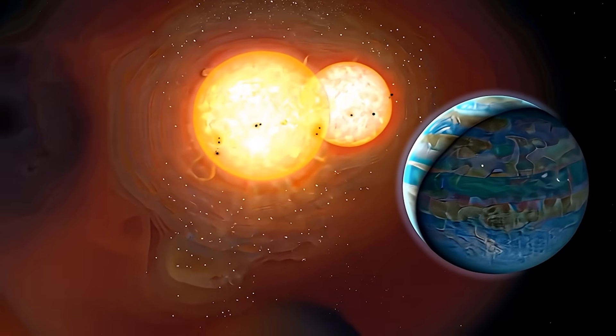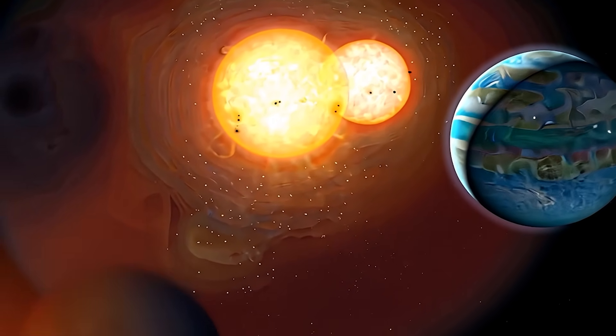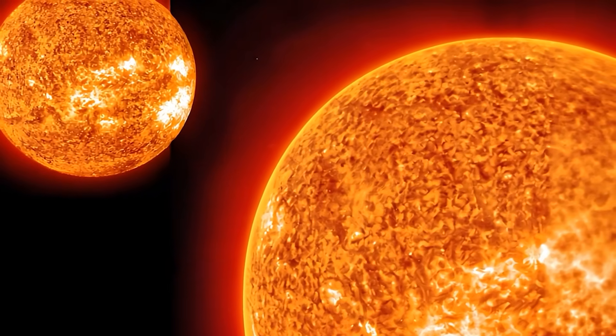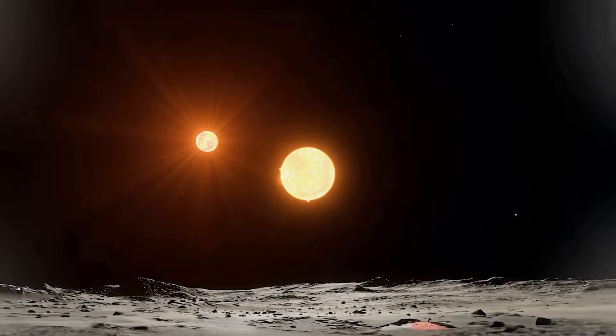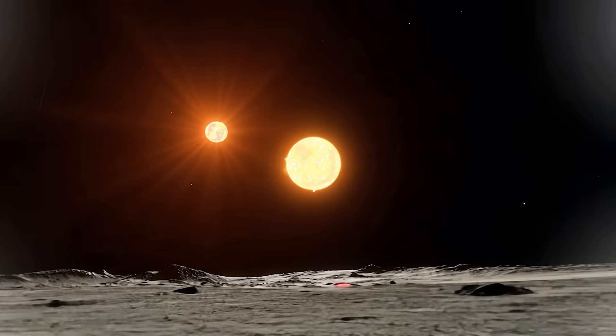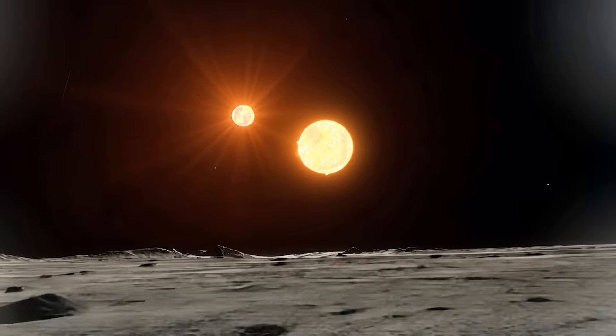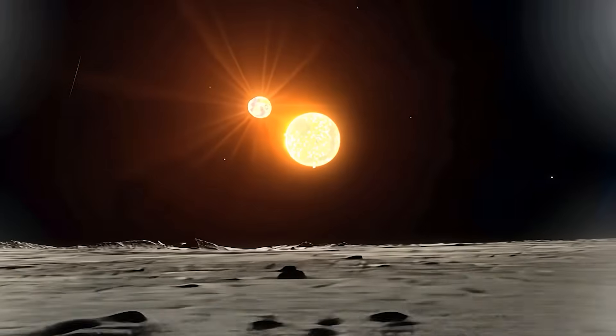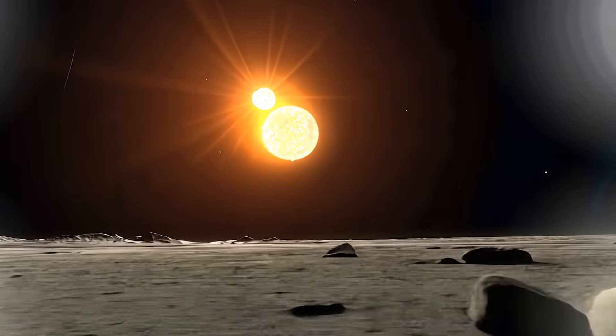Temperature variations across 2M1510ABb would be dramatic. When positioned above both brown dwarfs, one hemisphere faces the full radiation of two stars simultaneously. Later in its orbit, that same region might receive minimal starlight for extended periods. These temperature swings would drive massive atmospheric currents, perpetual planet-wide superstorms that would make the empire think twice about building any death stars nearby.